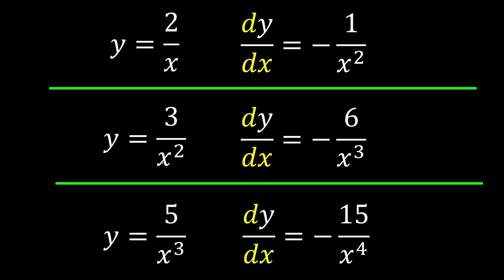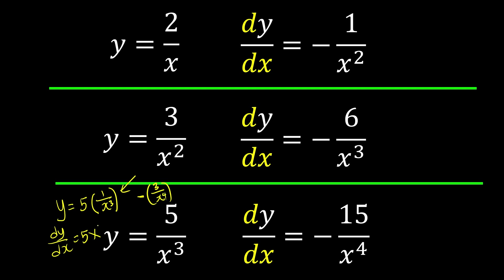Let's do one more. Take out the 5 first, so y equals 5 times 1 over x cubed. We just do the differentiation of that part times 5. Using the pattern: negative, power becomes numerator, and itself increases by 1. So we get negative 3 over x to the power of 4, and 5 times negative 3 is negative 15, over x to the power of 4. This is how you deal with cases where the numerator is not 1.